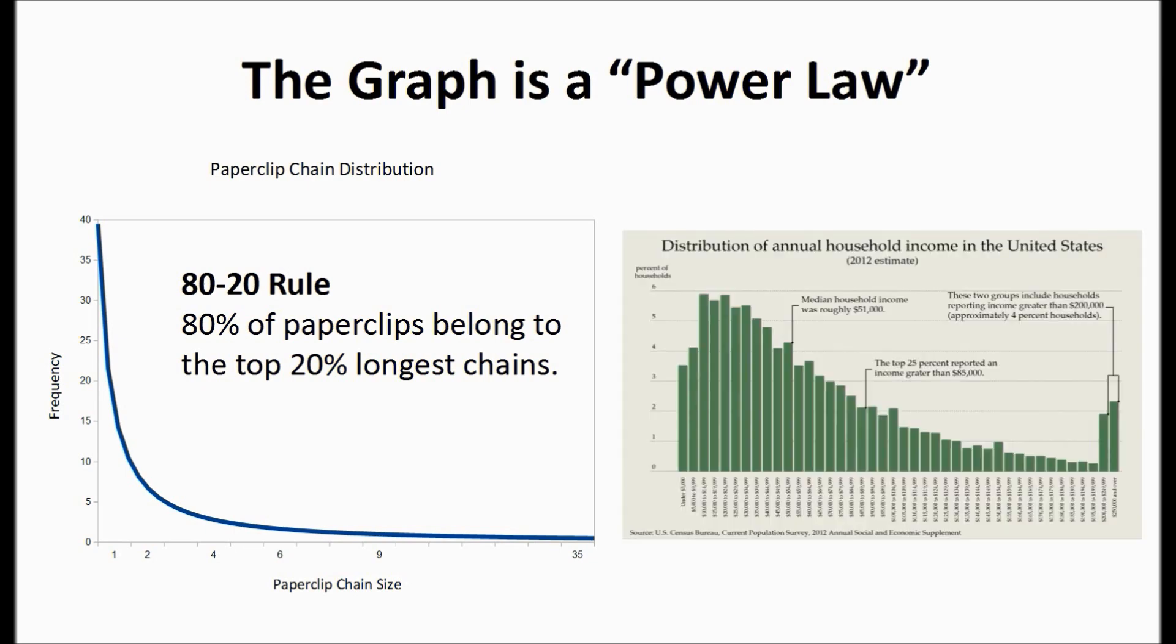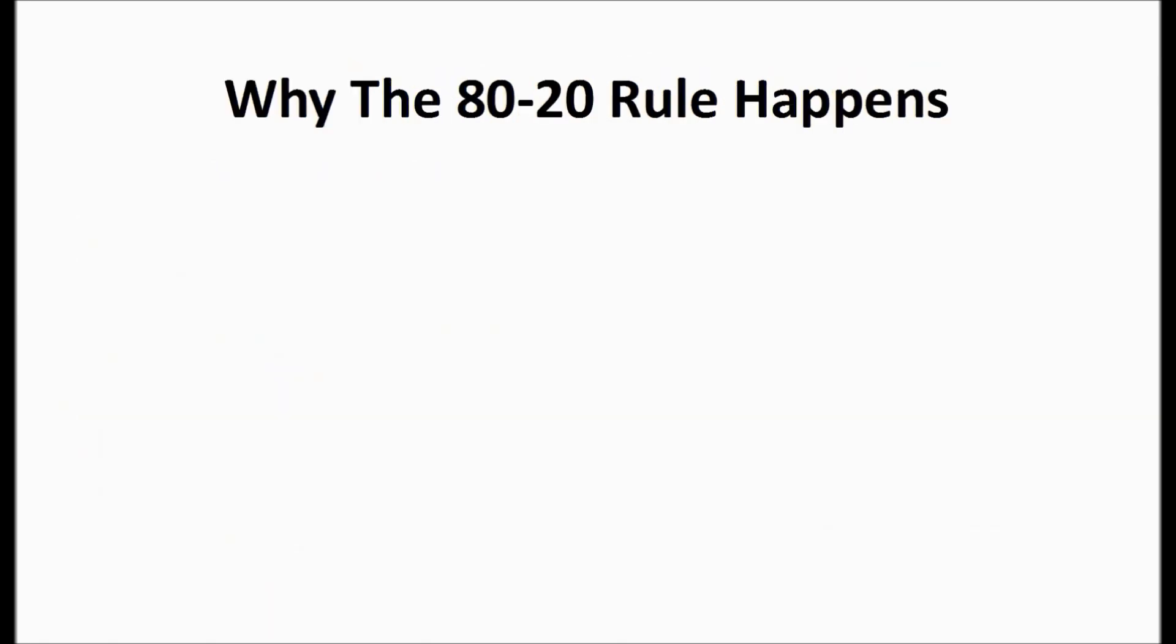This type of graph is also seen with income distribution. Now we know why the 80-20 rule happens. It's an emergent phenomenon from a process wherever the rich get richer.